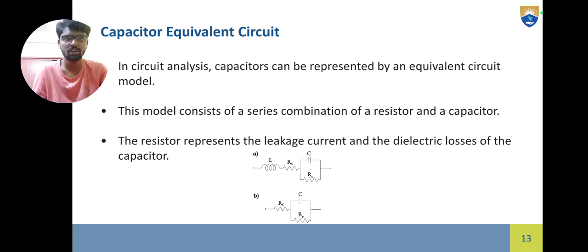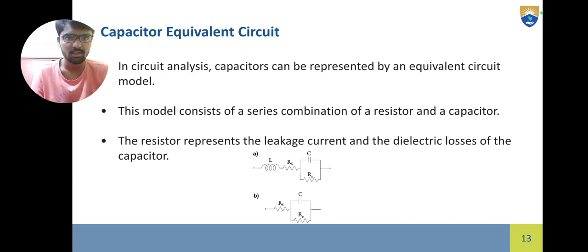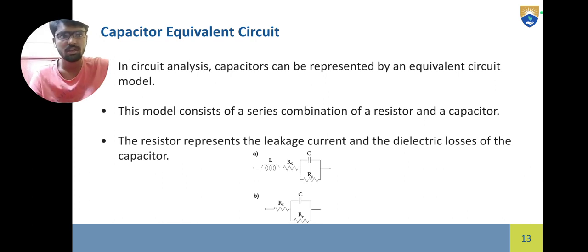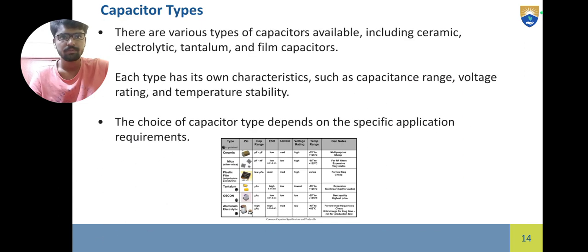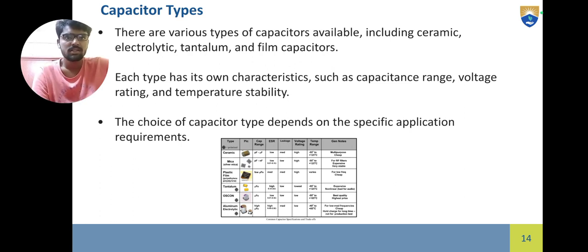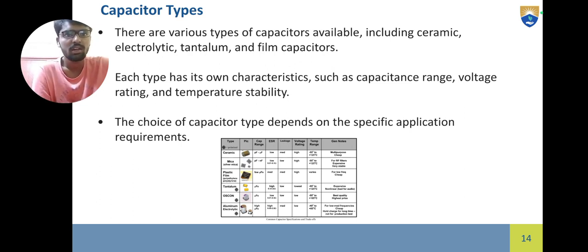In circuit analysis, capacitors can be represented by an equivalent model consisting of a series combination of a resistor and a capacitor. The resistor represents the leakage current and the dielectric losses of the capacitor. There are various types of capacitors available including ceramic, electrolytic, tantalum, and film capacitors. Each type has its own characteristics such as capacitance range, voltage rating, and temperature stability. The choice of capacitor depends on the specific application requirements.